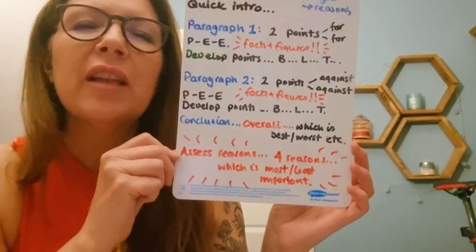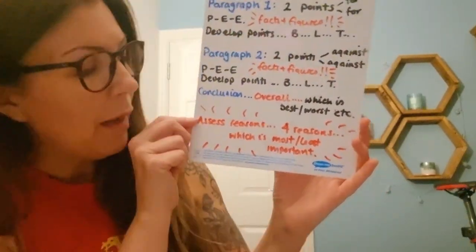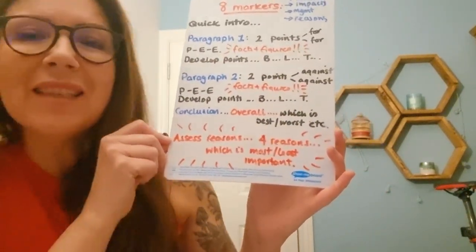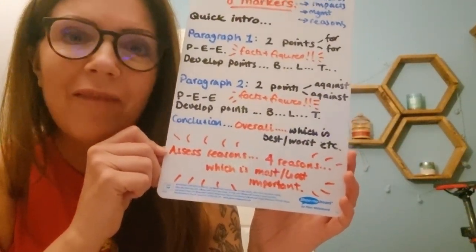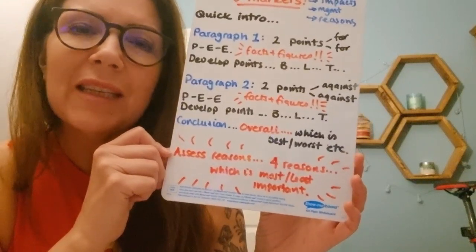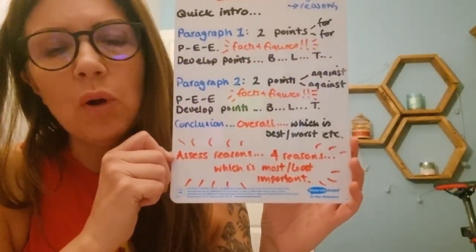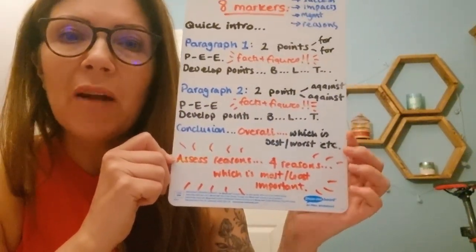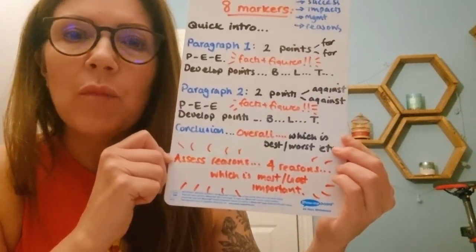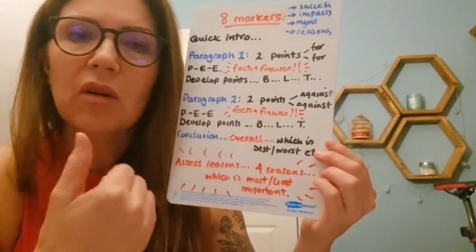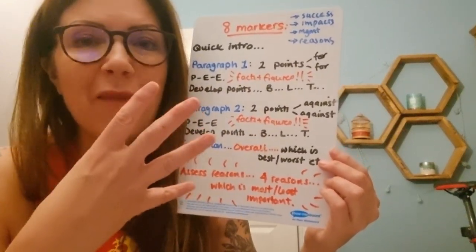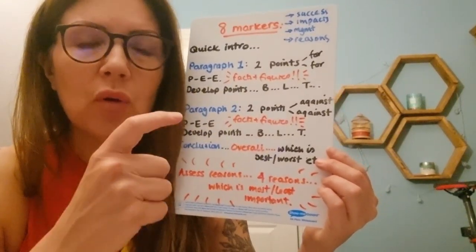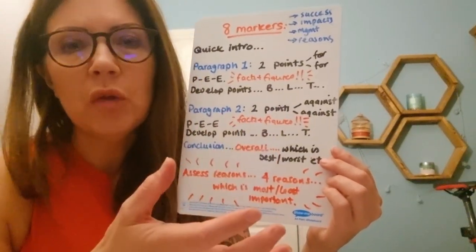Now you might be asked a question that doesn't really give you pros and cons, but, for example, asks like assess reasons for, okay. And in that instance, you'll still need to give four points, but you'll have to decide like which is the most and which is the least important. So your conclusion paragraph will be the same where you'll say like, this is the most important point, or this is the least important point. So it's the same kind of format. You'll still need four points for the eight marks, but you won't be, it won't be two, four, and two against.